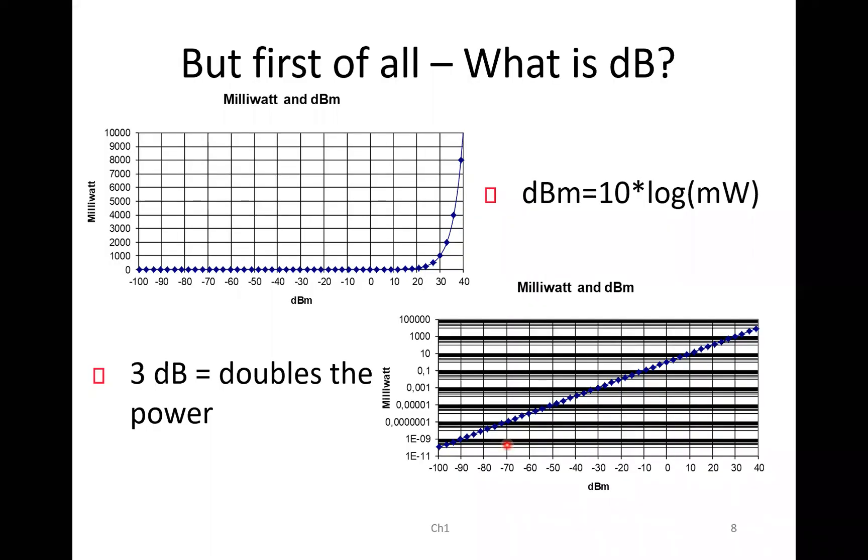But first of all, what is dB? Well, that is the engineer's way of not telling the economist what they are doing. Well, that was a joke. The dB or the dBm as we are going to use is the 10 logarithm of milliwatts. And the reason why we are dealing with dB is that it goes from large to small in a very simple way.